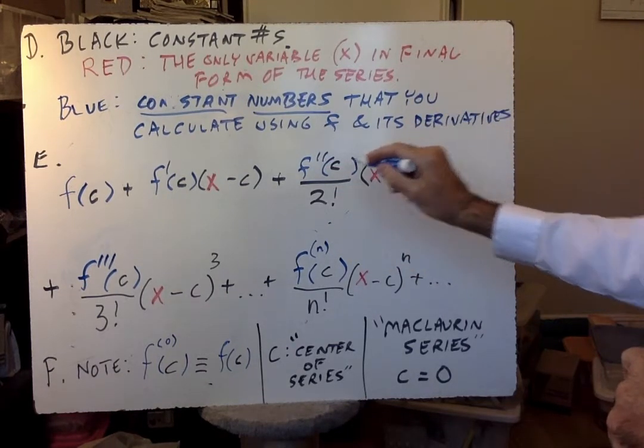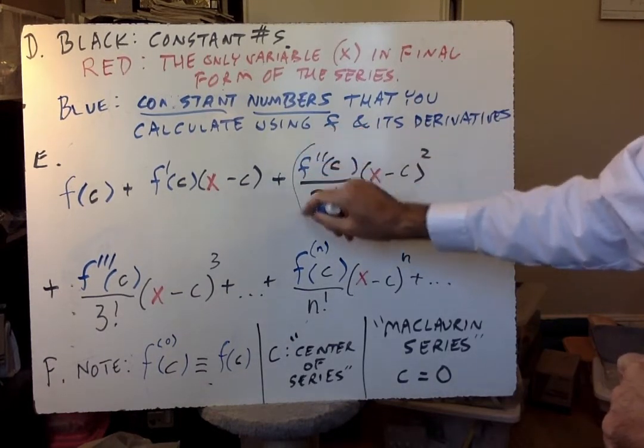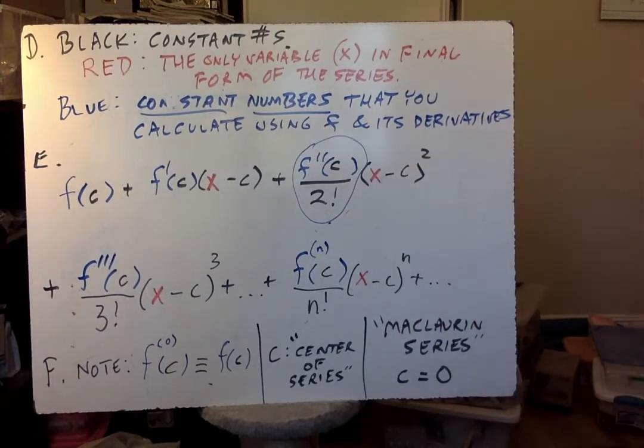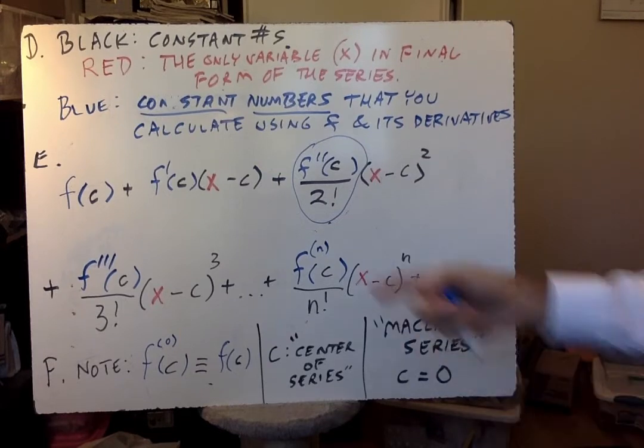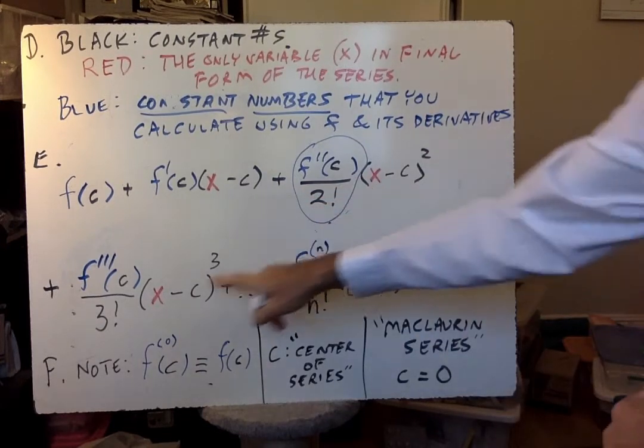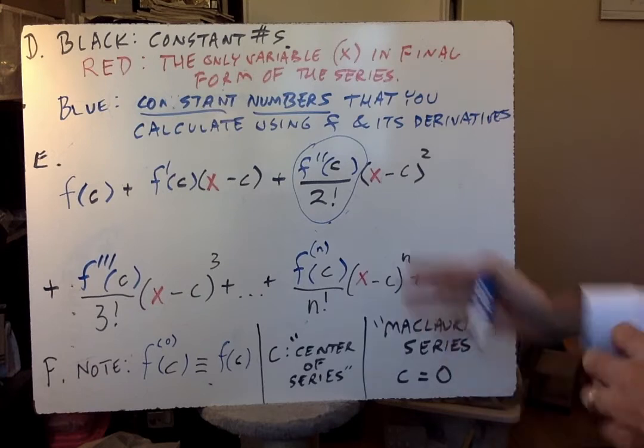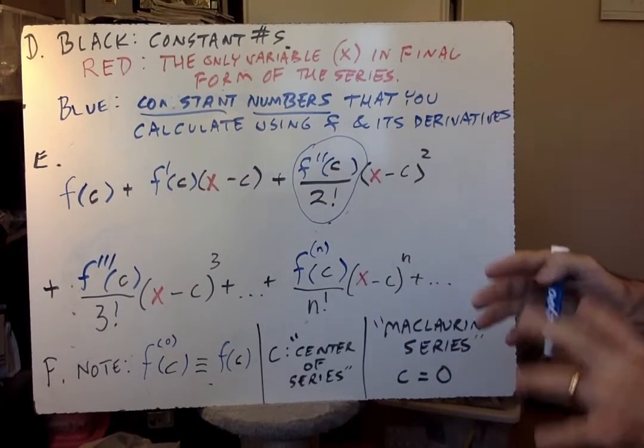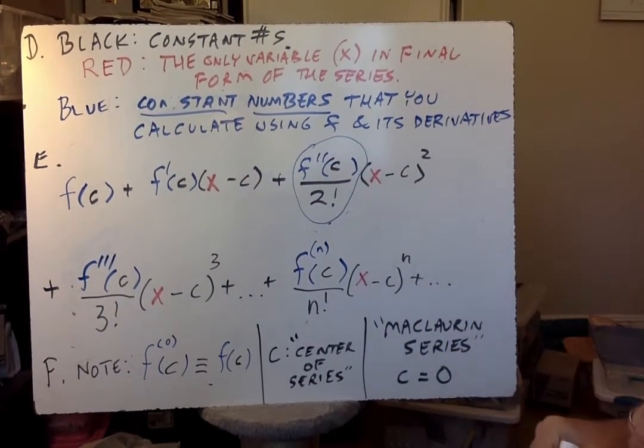They just don't feel like numbers at first because you have to perform calculations to get them. But don't forget to plug in and get a final number. So this in the final version of the series has to be a number. If you have any letters in here you've done something wrong. The only letter in your final form of the series should be what's in red here, x. If you see any x's anywhere else, you've done something wrong.